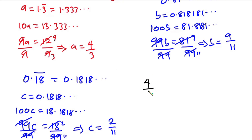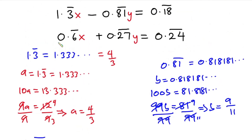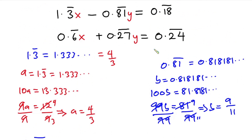So the first equation becomes: (4/3)x − (9/11)y = 2/11. This is our equation 1. Now let's focus on the second equation.